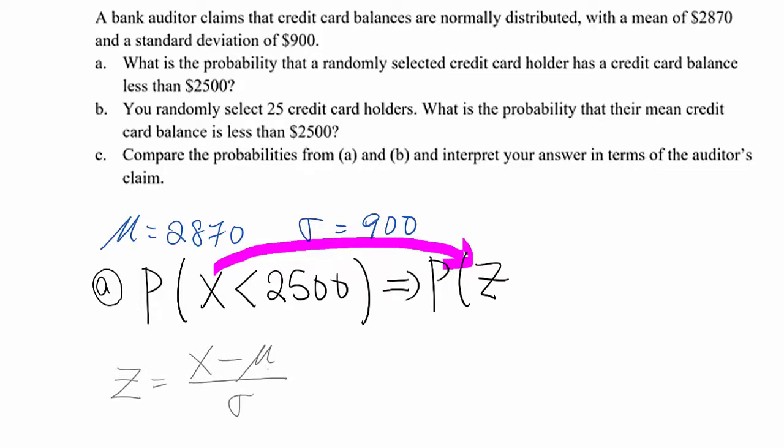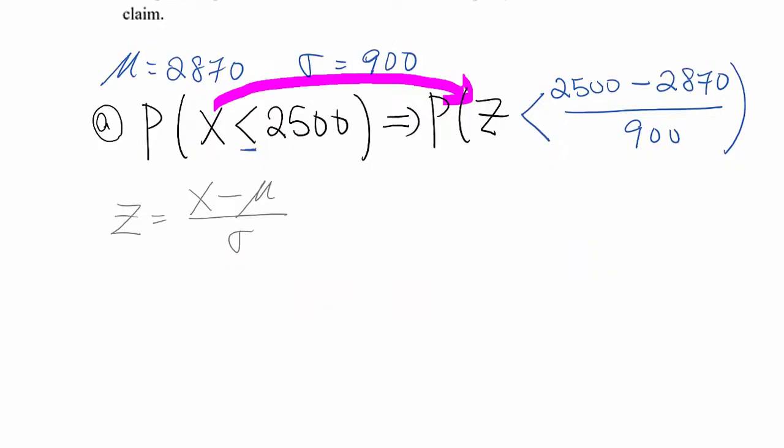So now we follow exactly same sign this one. That become 2500 minus 2870 over 900 which is sigma value. So, if you calculate,